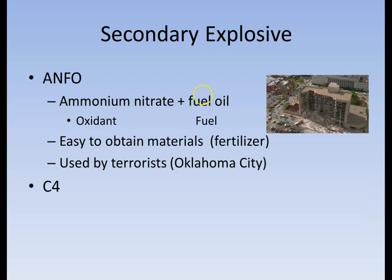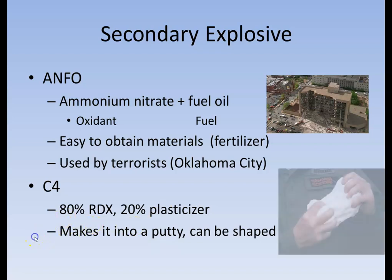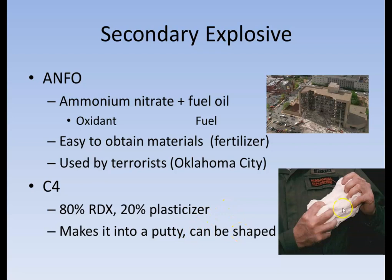Something a little harder to obtain is C4, which is 80% RDX and 20% a plasticizer. The plasticizer makes it pliable, so C4 looks sort of like Play-Doh and can be shaped into different forms or packed into different things — very useful for making shaped charges. Interestingly, you can actually light C4 on fire and it'll slowly burn, because you haven't hit its activation energy. So C4 is very stable and easy to carry around. But when you stick the detonator in — the detonator being the primary explosive — and C4 being the secondary explosive, you get the huge explosions.